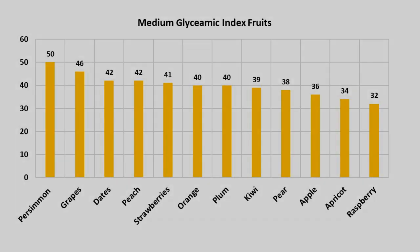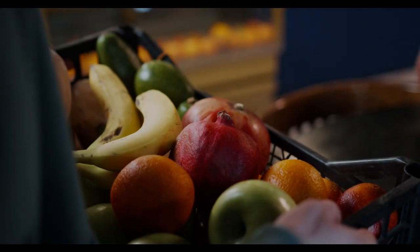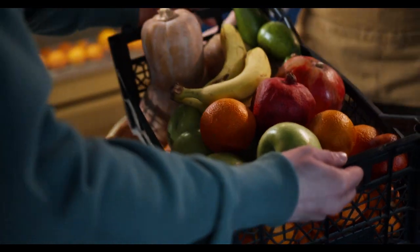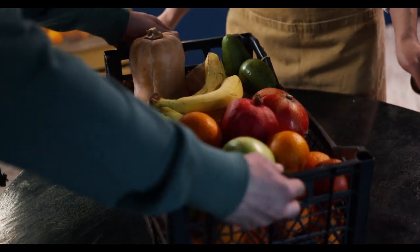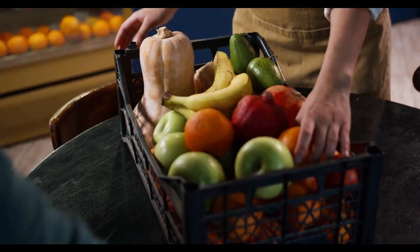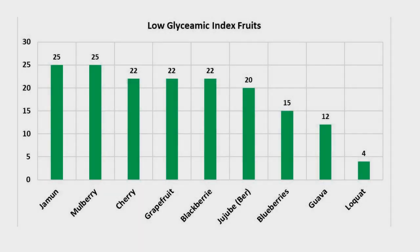Diabetic patients can take these fruits on a daily basis, but quantity should be considered — it may be one or two fruits. The third category of fruits is the low GI — low glycemic index. This category is friendly for diabetic patients.